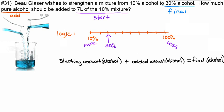What's the starting amount of alcohol? We're starting with 7 liters, but only 10% of that is alcohol. So we take 10% times 7. That would be 0.7. So 0.7 liters of the starting mixture is actually alcohol.